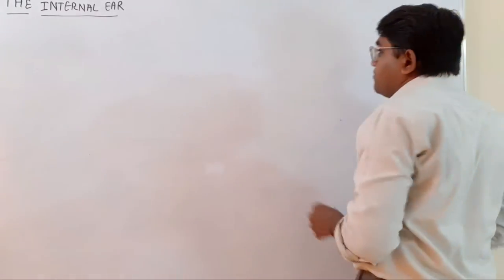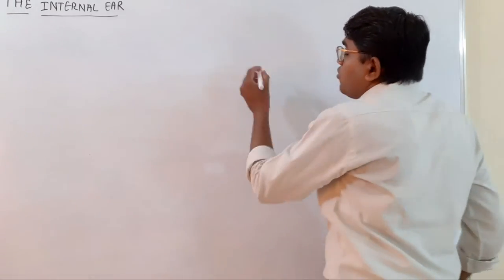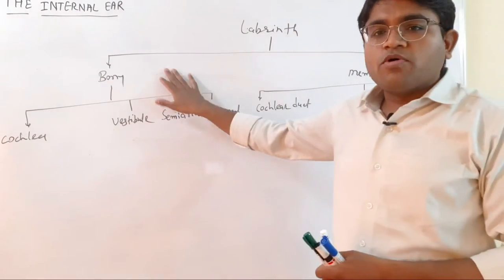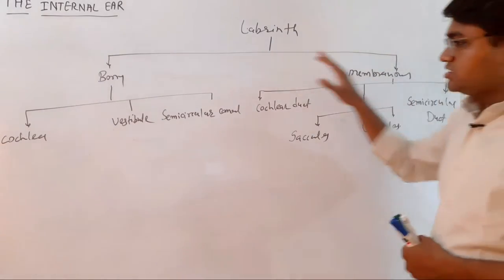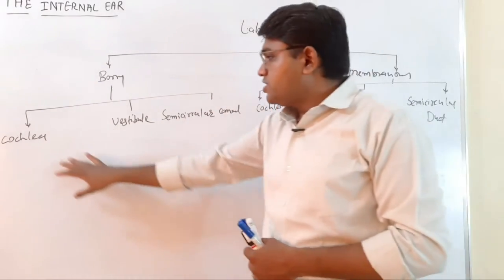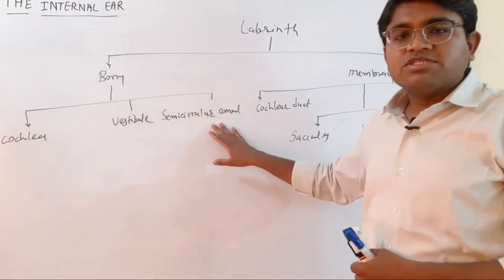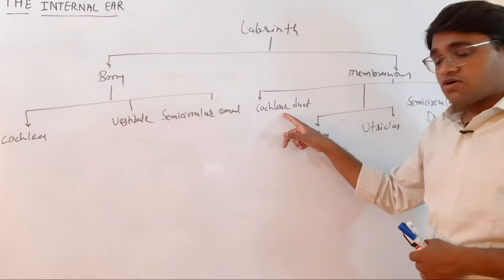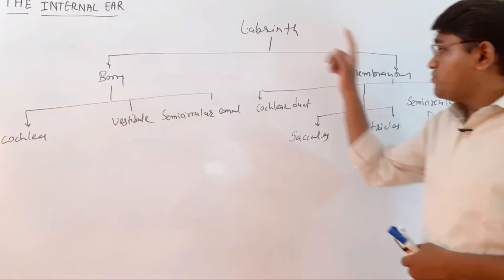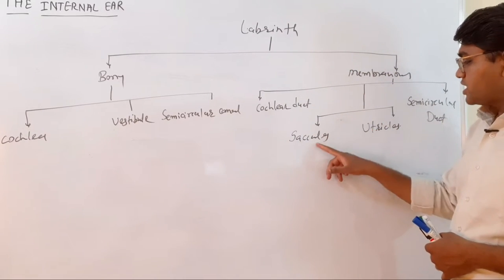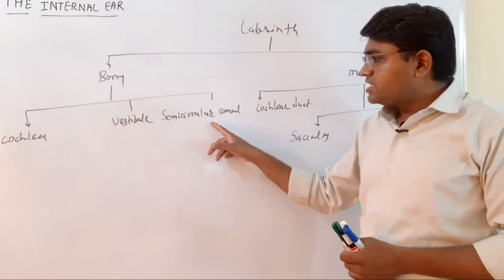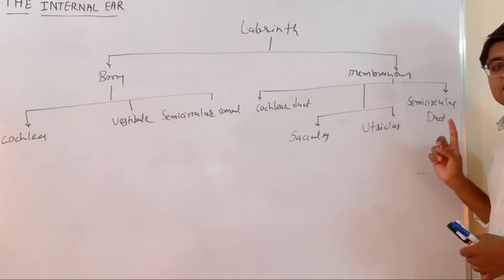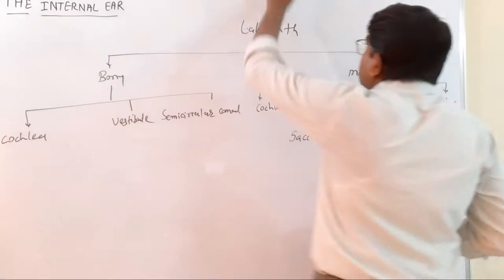The labyrinth can be divided into two parts: the bony labyrinth and the membranous labyrinth. The bony labyrinth has three structures: the cochlea, the vestibule, and the semicircular canal. Inside the cochlea, the membranous labyrinth part is known as the cochlear duct. Inside the vestibule, the membranous labyrinth has two structures — the saccule and the utricle. Inside the semicircular canal, the membranous part is known as the semicircular duct.